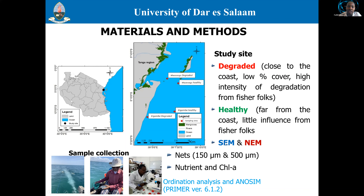The study was conducted in two seasons: the southeast monsoon season and the northeast monsoon season. The southeast monsoon experiences high winds up to nine meters per second, low temperatures, and little rainfall. The northeast monsoon has moderate wind speed up to five meters per second, is associated with short rains, and has higher temperatures.